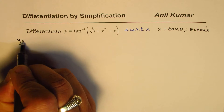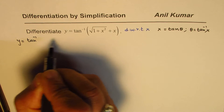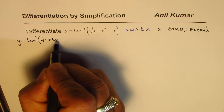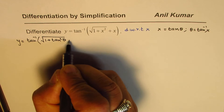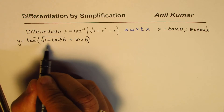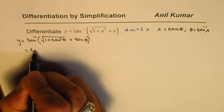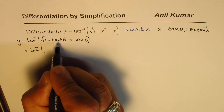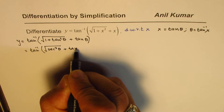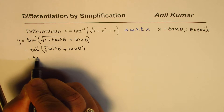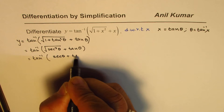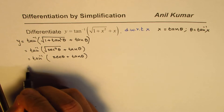So we have y equals to tan inverse of square root of 1 plus tan squared theta, plus tan theta. Now, 1 plus tan squared theta is secant squared theta, so we write this as square root of secant squared theta plus tan theta. Taking the square root gives us secant theta plus tan theta. So we still have two terms.